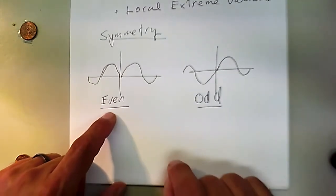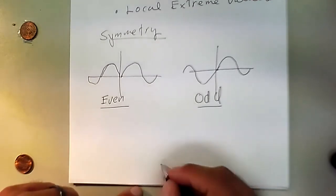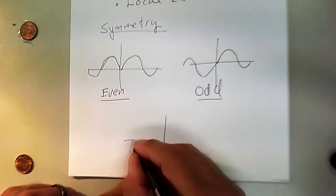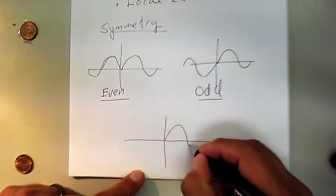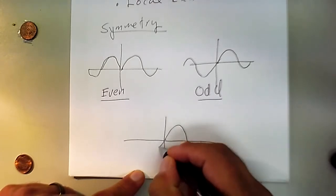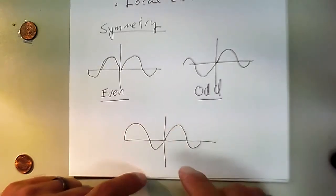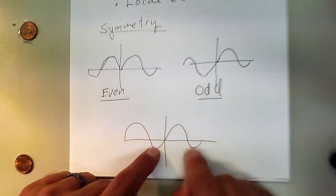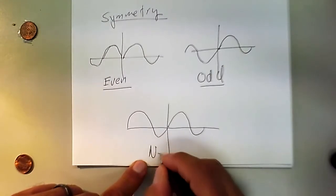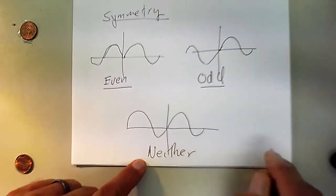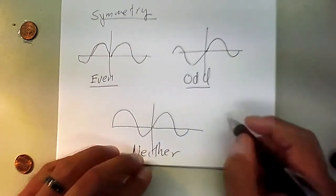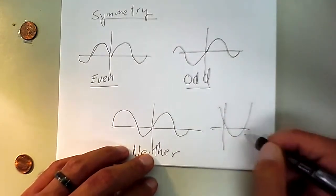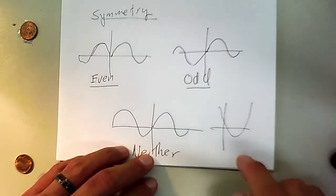We have even functions, odd functions. Most functions are going to be neither. There is even, odd, there is both, but most functions are going to be neither. For example, a simple parabola that doesn't have a vertex on the y-axis, opening up or down, that is neither also.